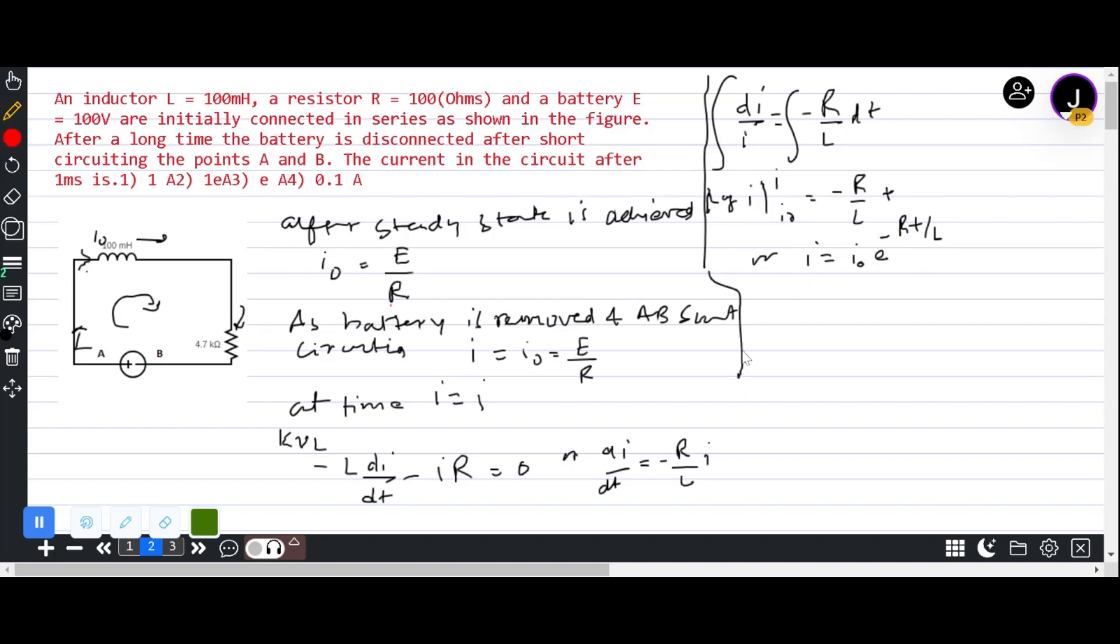Now we have i₀ which is E by R. We'll substitute that value. E is 100, R is also 100, so that is 100 by 100.